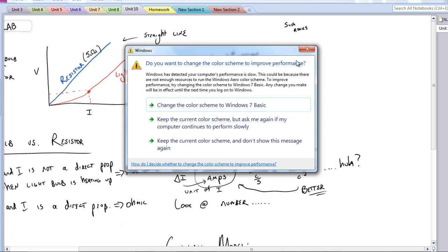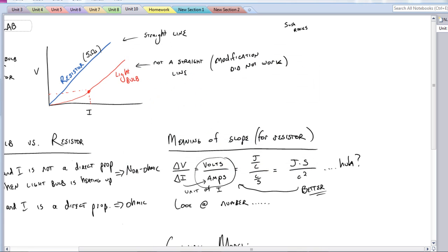However, if you would have looked at the number, the number in this case was five. And you should have been like, huh, five, where have I seen five before? That was actually written on the resistor.